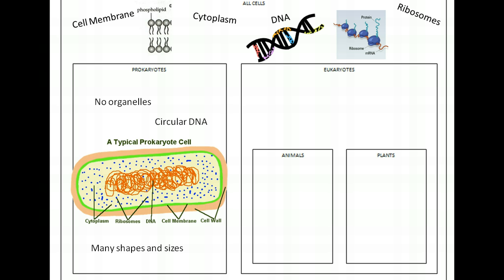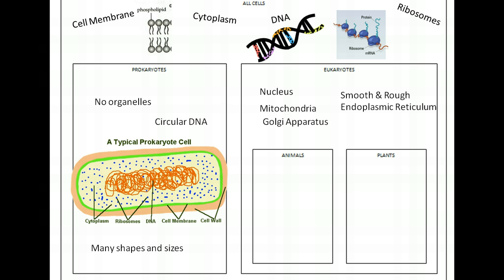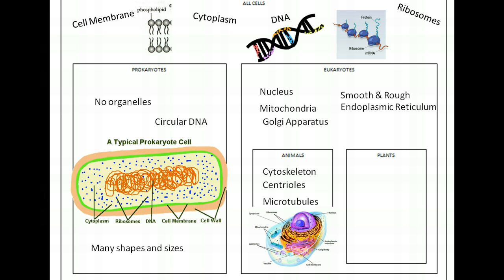You'd love biology if all we had to do was study prokaryotes, but unfortunately we've got to go a little bit deeper into eukaryotes. Eukaryotes have the organelles you're probably already familiar with: the nucleus, the mitochondria, Golgi apparatus, smooth and rough endoplasmic reticulum. Animal cells in particular have a cytoskeleton, centrioles, and microtubules, usually drawn in a circular form with a great big nucleus in the middle.